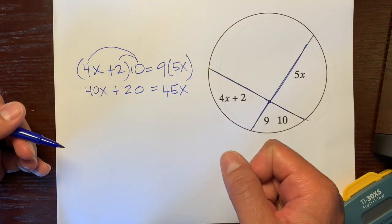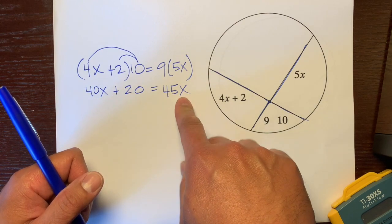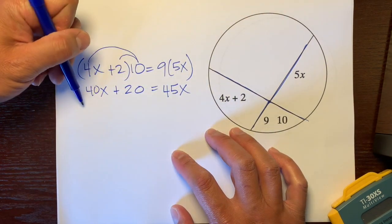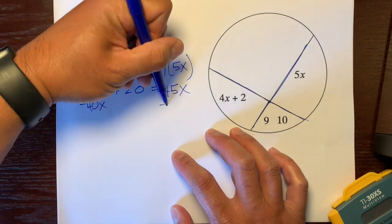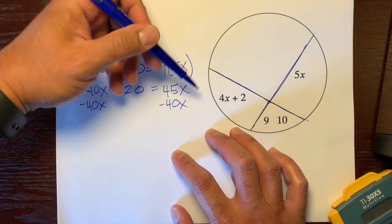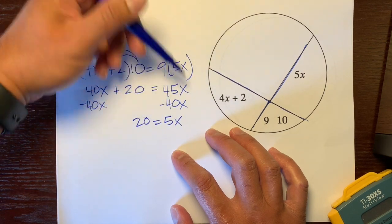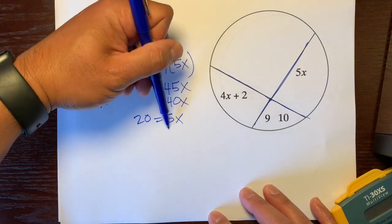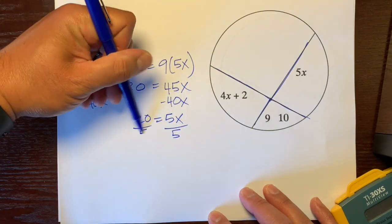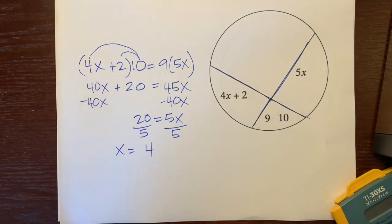Now let's just solve this. Let's get this 40 to the other side because this one has an x with it. So subtract 40 here and here. 45x minus 40x is 5x equals 20. This is 5 times x. Opposite of multiplication is division. 20 divided by 5 is 4. So x is equal to 4.